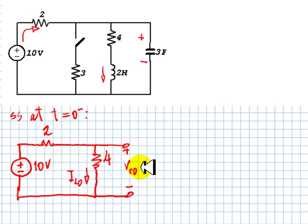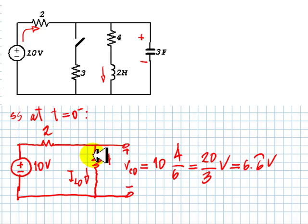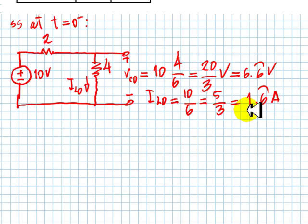Voltage divider gives me 10 times 4 over 6, which is 20 over 3 volts. And this current is 10 divided by 6, so IL0 is 10 volts divided by 6, which is 5 thirds of an amp.